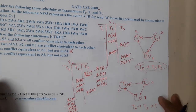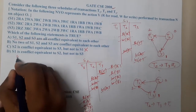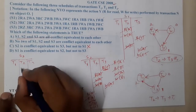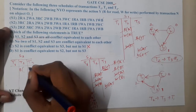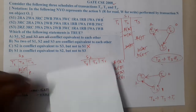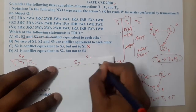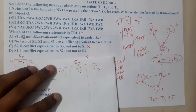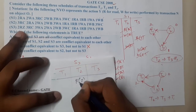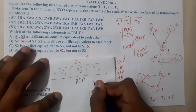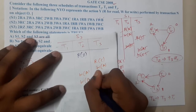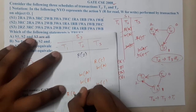Now moving on to the third one, S3. Let us set up S3 with T1, T2, T3. The operations listed are: Read Z, Read C, Write A, Write A, Write B, Write C, Write A, Write B. Let us draw the precedence graph with nodes T1, T2, T3.